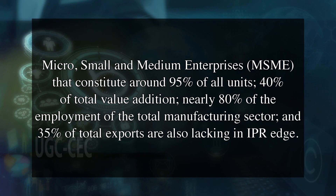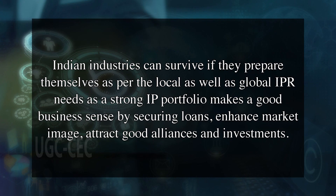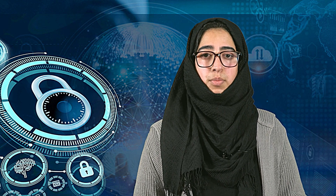Unawareness amongst youth, academicians, researchers, industrialists and traders in India about IPR and its benefits is the main reason for lagging behind in IPR participation. Even micro, small and medium enterprises that constitute around 95% of all units, 40% of total value addition, nearly 80% of employment in the total manufacturing sector and 35% of total exports are also lacking in IPR edge. Due to these reasons, there was no Indian multinational company in the top 100 patent applicants worldwide during 2003 and 2012. Indian industries can survive if they prepare themselves as per local and global IPR needs, as a strong IP portfolio makes good business sense by securing loans, enhancing market image and attracting good alliances and investments. There is a dire need to develop appropriate guidelines to rationalize IP strategy. India has the potential and skills to emerge as a global leader if an appropriate IPR strategy is practiced to improve its share in global trade.